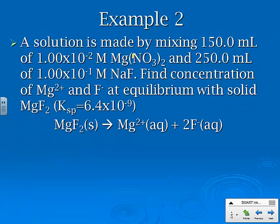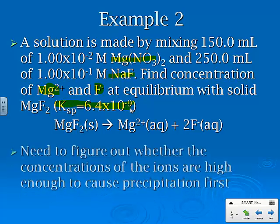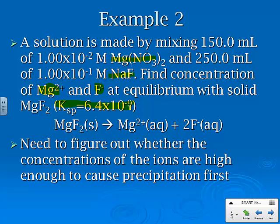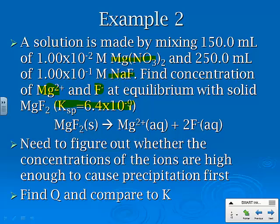Now we've got a solution by mixing these two combinations. We've got magnesium nitrate and we've got sodium fluoride. This time, we want to find the concentration where magnesium and fluoride are at equilibrium, and here's our Ksp value. So what we need to figure out is whether the concentration of the ions are high enough to cause precipitation first.